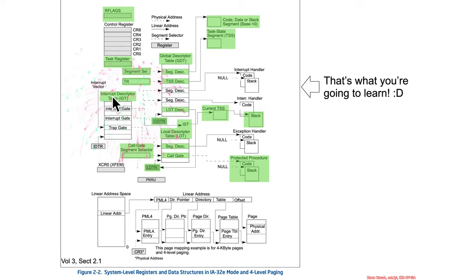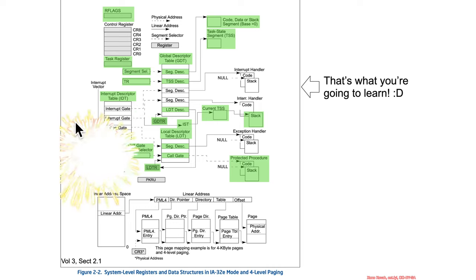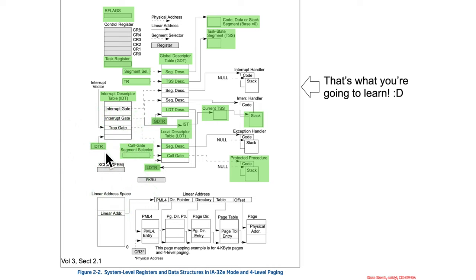So what did we learn in this section? We learned the general principle that there is a thing called the IDT, but we did not learn what's inside of it. We did learn that the IDT register is going to point at the base of the IDT. So let's continue on to the next section and figure out what is the stuff inside the IDT.